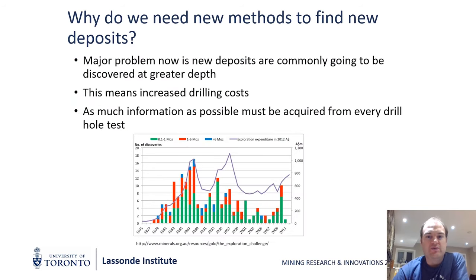So why do we need new methods to find ore deposits? A major problem occurring in mineral exploration for the last 20 years or more is that it's getting harder and harder to find new deposits. This chart near the bottom of the slide shows us that in the past we used to be able to increase exploration dollars and find more deposits, but unfortunately that hasn't happened since the 80s. This is largely because a lot of the easiest to find deposits near surface have been found and exploited, and new deposits are either going to be found at greater depth or under cover. This means increased drilling costs, and that we must get as much information out of each drill hole as possible.